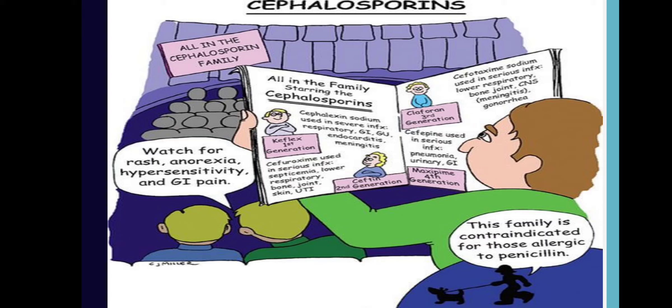Here are the cephalosporin family indications by generation. First generation — cephalexin sodium, brand name Keflex — used in severe infection, respiratory, GI, GU, endocarditis, and meningitis. Second generation — used in septicemia, lower respiratory infections, bone, joint, skin, and UTI infections. Third generation — cefotriaxone — used in lower respiratory, bone, joint infections, meningitis, and gonorrhea. Fourth generation cephalosporin is used in pneumonia, urinary, and GI infections.